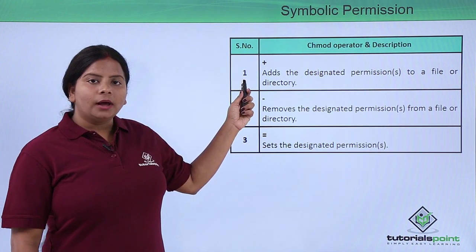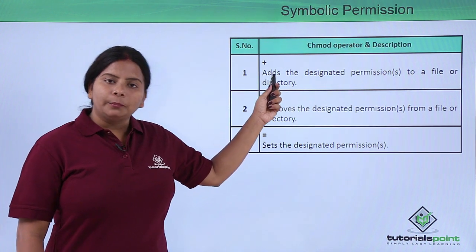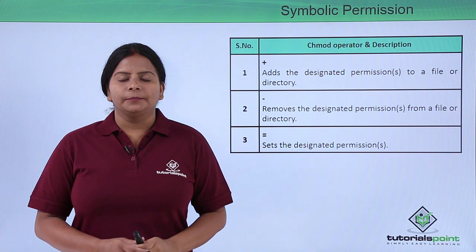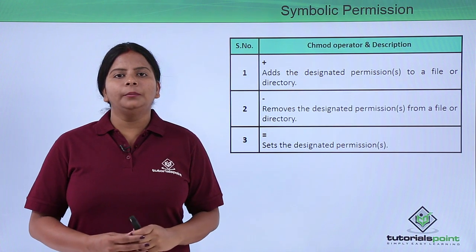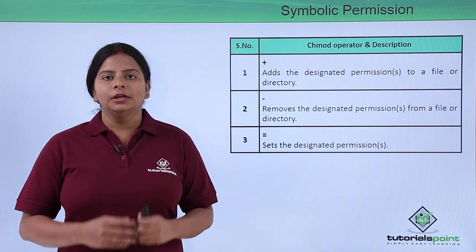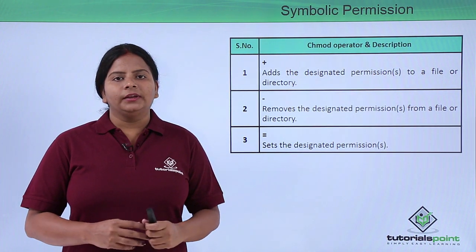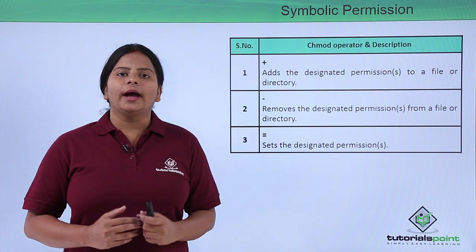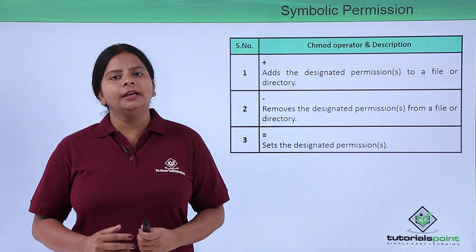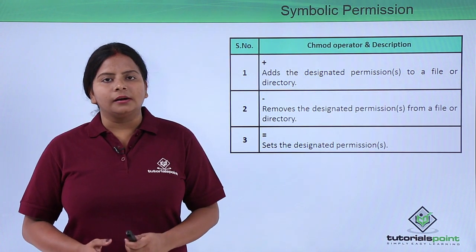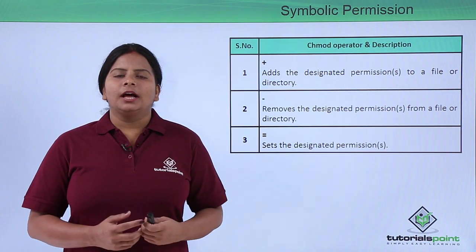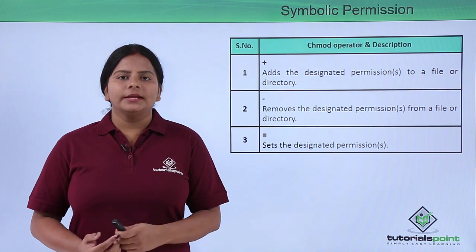The plus symbol is used for adding a permission to a file. For example, if I want to add execute permission I use plus x. If I want to add a write permission I use plus w, or if I want to add a read permission I use plus r.